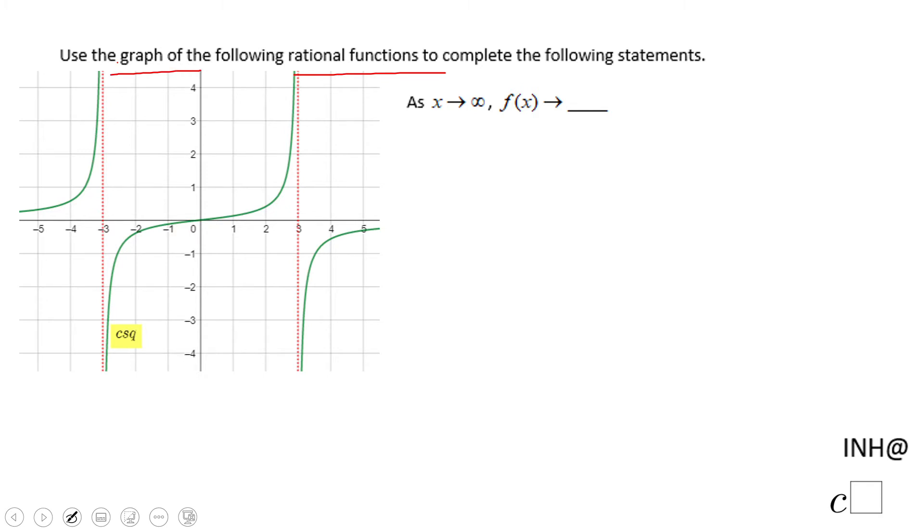This one tells us what happens with the function f(x) when x is getting closer and closer to infinity. As x is approaching infinity, which is obviously impossible, that means what happens when x is getting larger? When x is getting larger, that's what it says here. The function is getting closer and closer to zero.